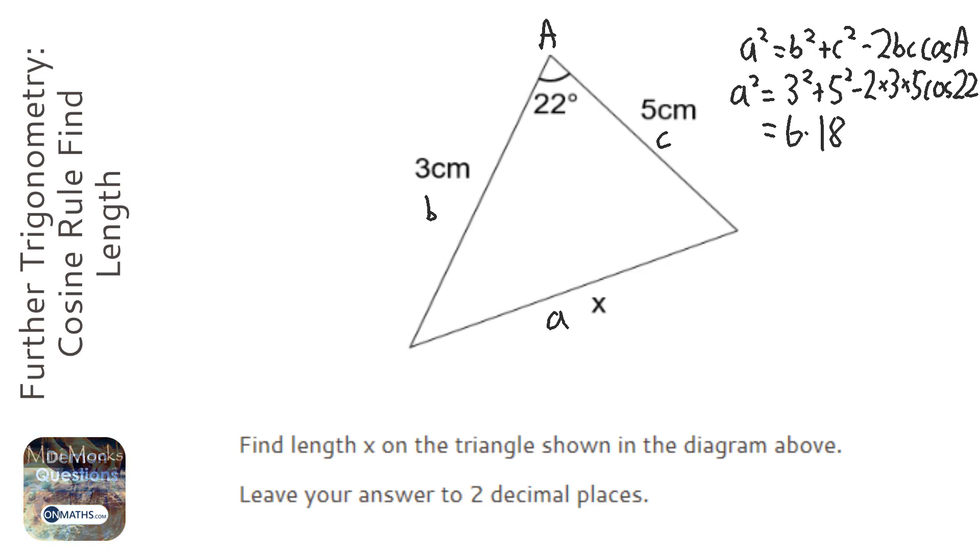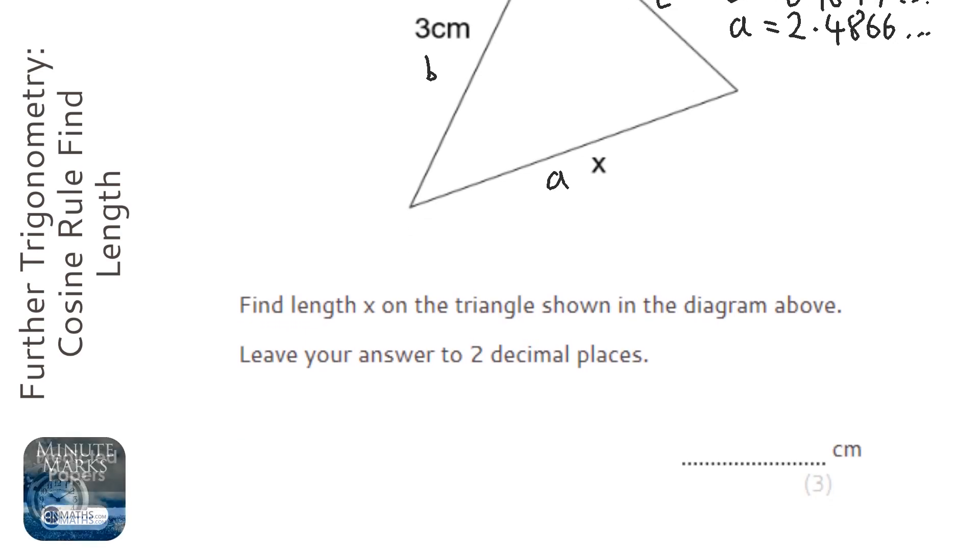And we get this, and I'm going to leave that in my calculator because I then have to square root it to find out what a is. So I'll press square root answer, and it's 2.4866..., and it wants it to two decimal places, so that would be 2.49.